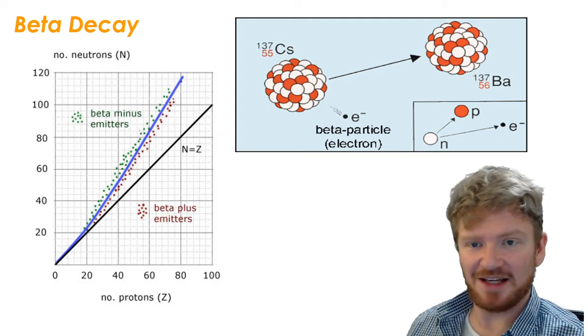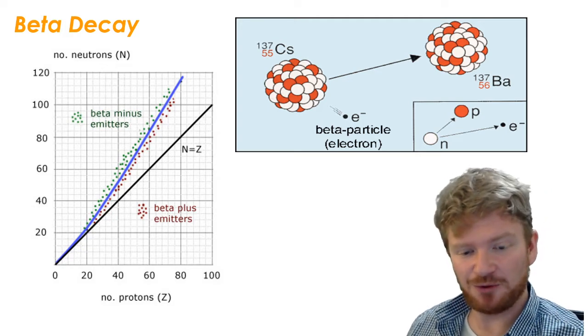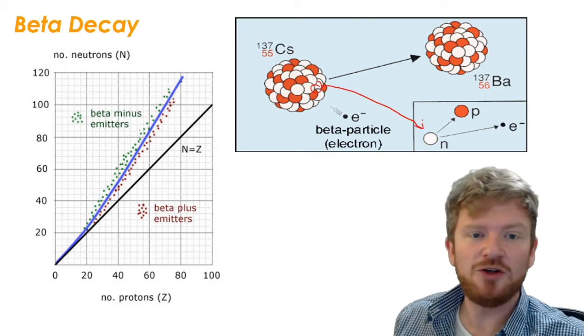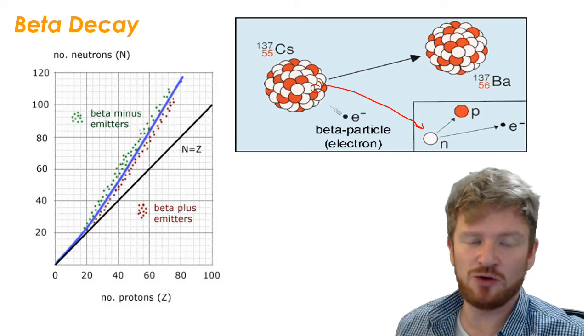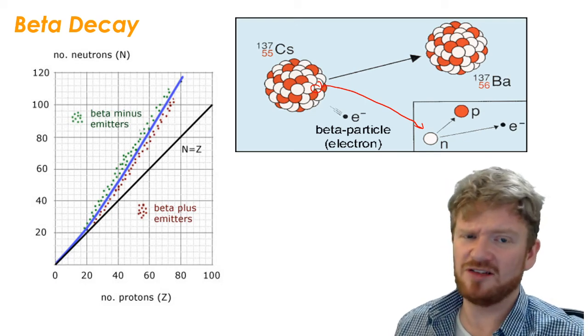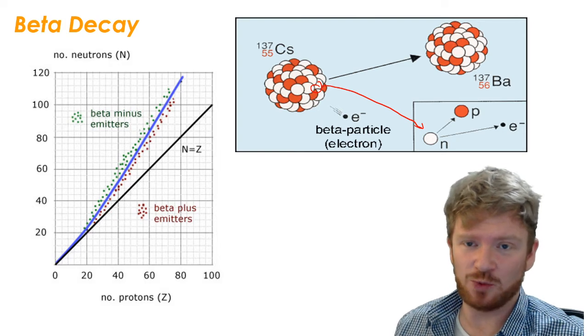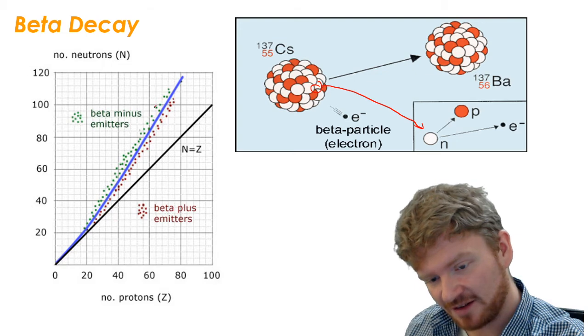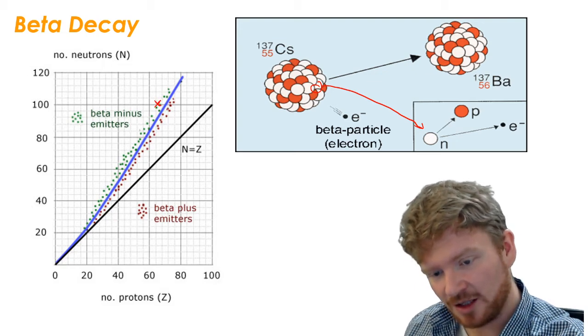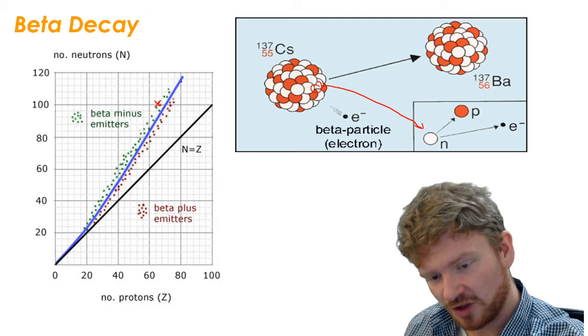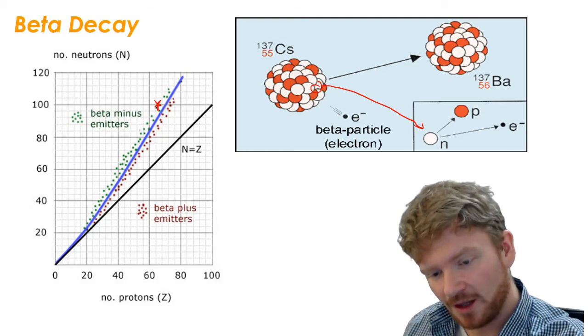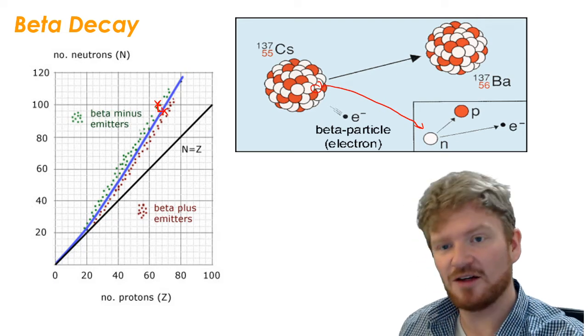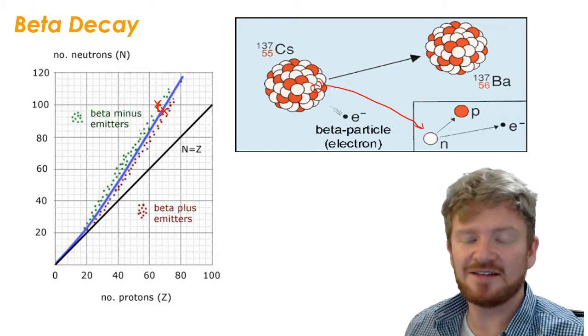Now, in beta decay, beta decay is a little bit different. What happens is deep inside the nucleus, a neutron is able to turn itself into a proton. Why is crazy and weird, and we don't need to understand why. But if we think about this graph, if I have an atom that's sitting over here, well, the number of neutrons is going to go down by one. But the number of protons is going to go up by one. So the element finds itself back on this curve, and it's now stable.